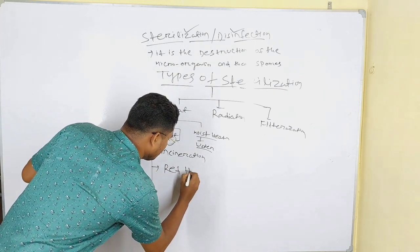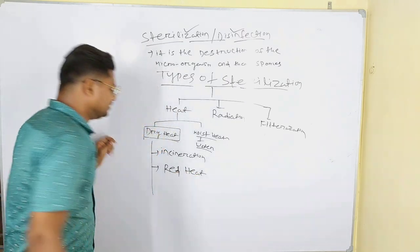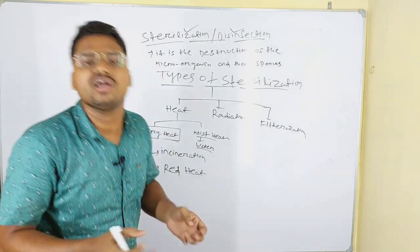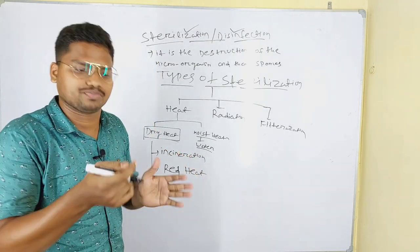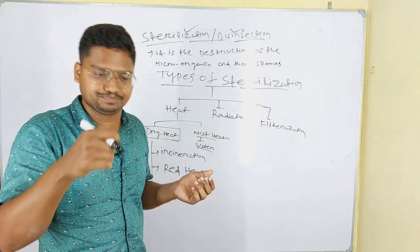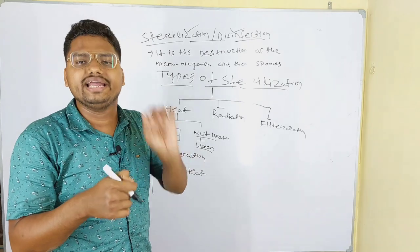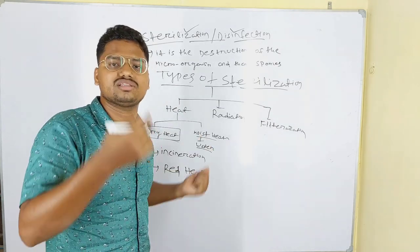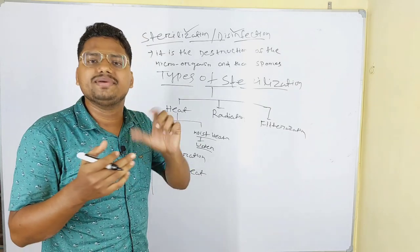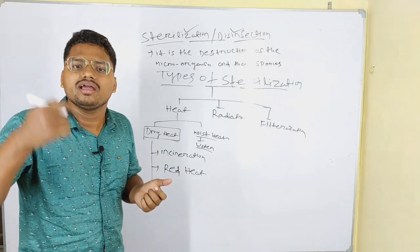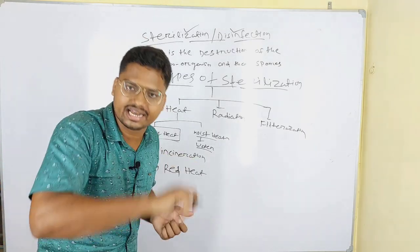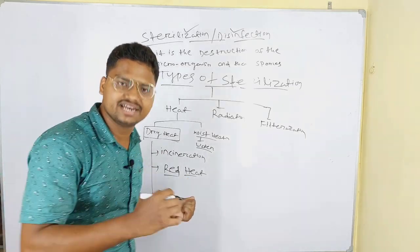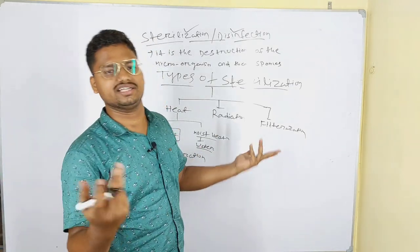The second type of dry heat sterilization is red heat. In red heat, we put materials into the Bunsen burner. The materials are heated until they glow red in color. For example, if we heat an iron rod, it looks red in color — that is called red heat sterilization.